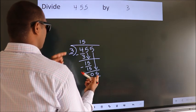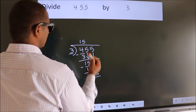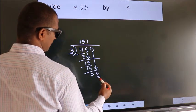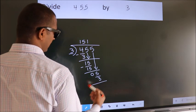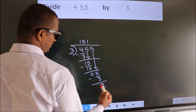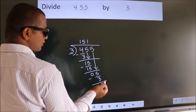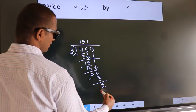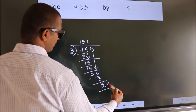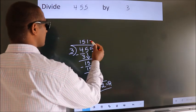A number close to 5 in the 3 table is 3 once 3. Now we subtract. We get 2. No more numbers to bring down. So we stop here. This is our remainder. This is our quotient.